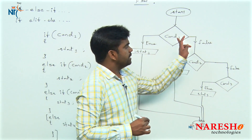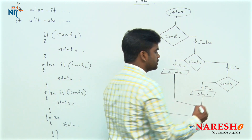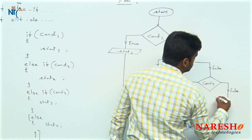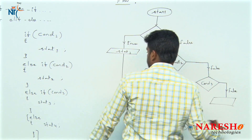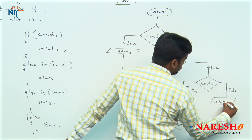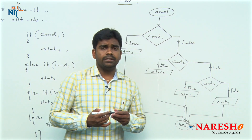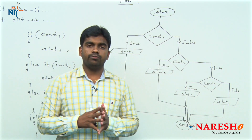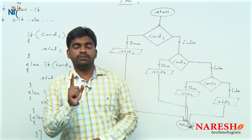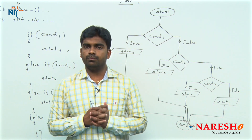If all the given conditions — condition one is false, two is false, three is false — then the final else block will execute, which is the optional else block. That is statements four; statement four executes and moves to End. It is allowed to define n number of blocks, but at a time it will execute only one block's statements.